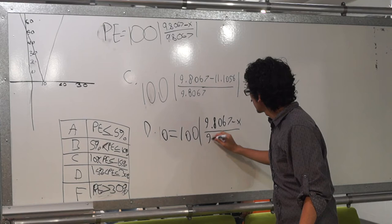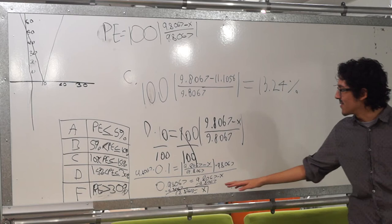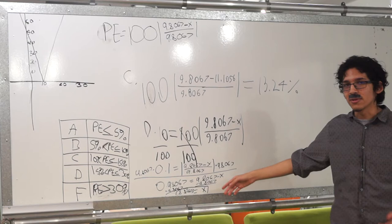As you can see, after doing the math, x is 8.826. Which means that that number gives the exact 10% percent error. So, our next problem.